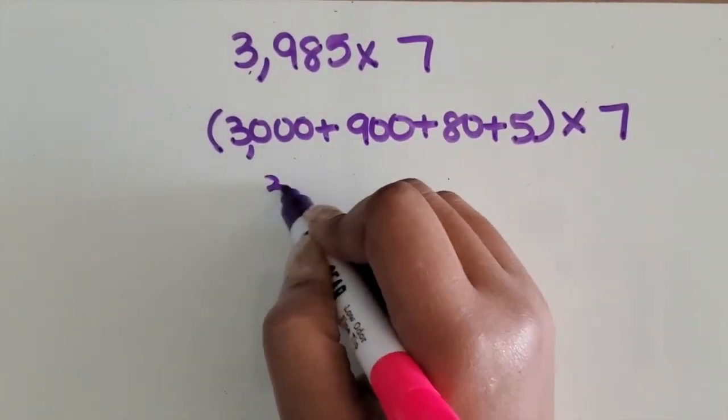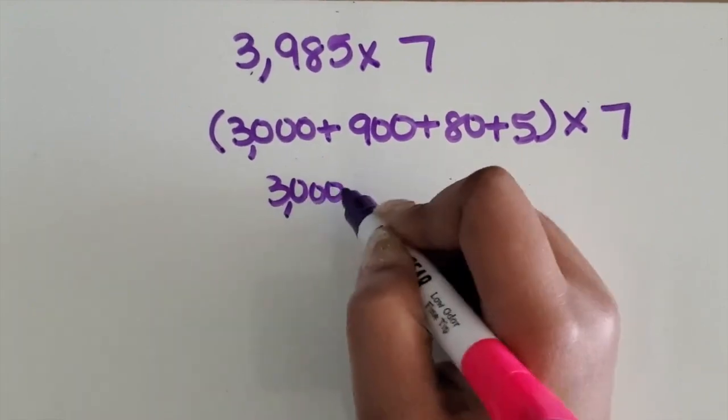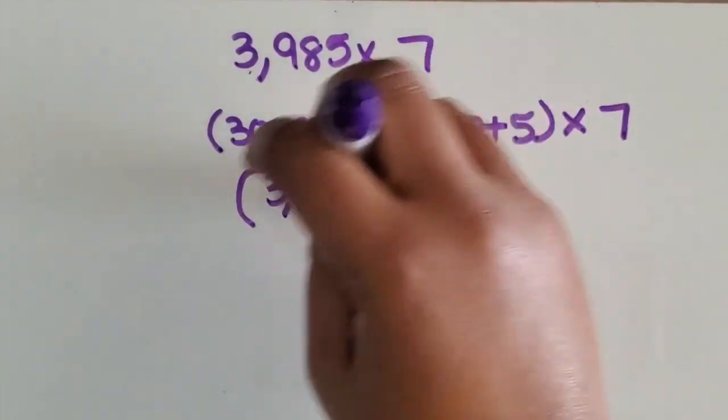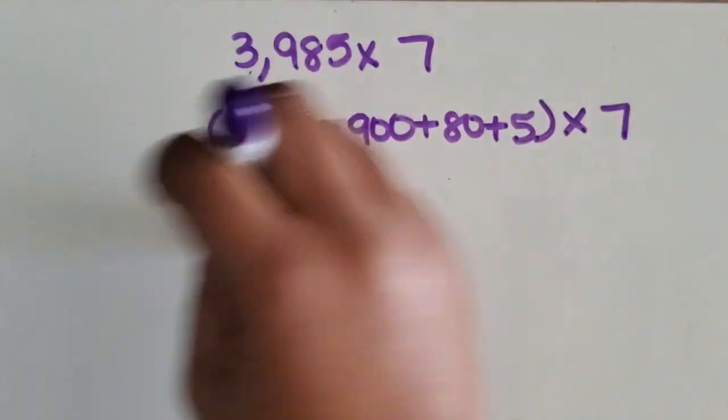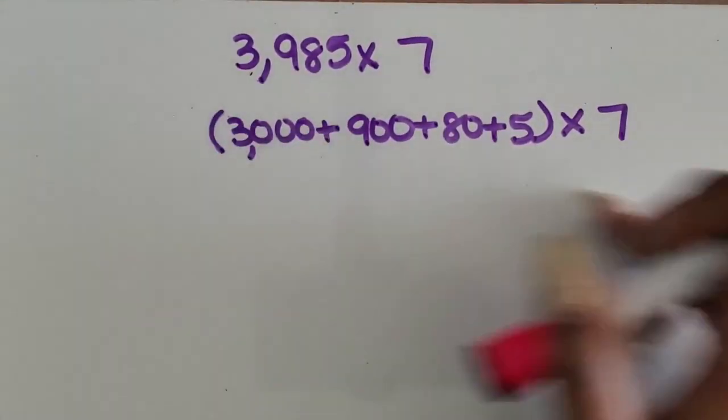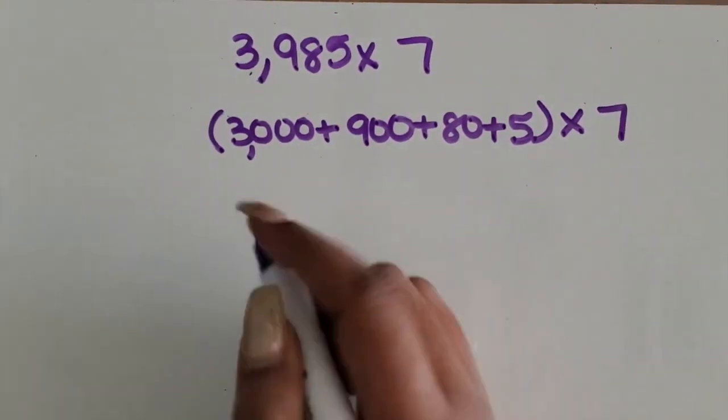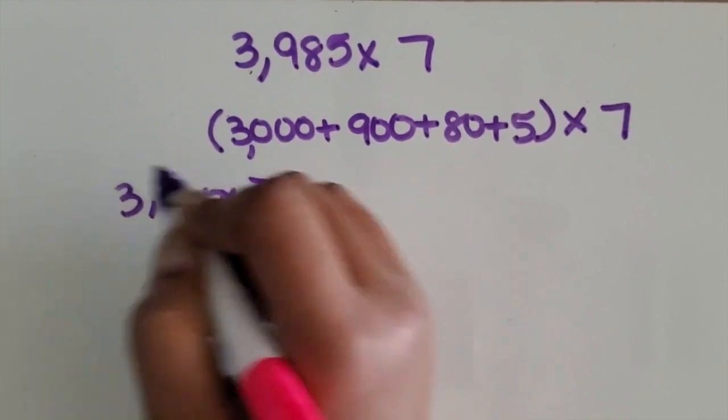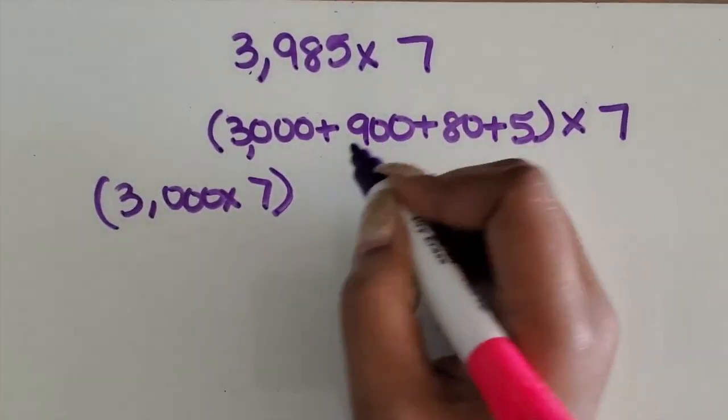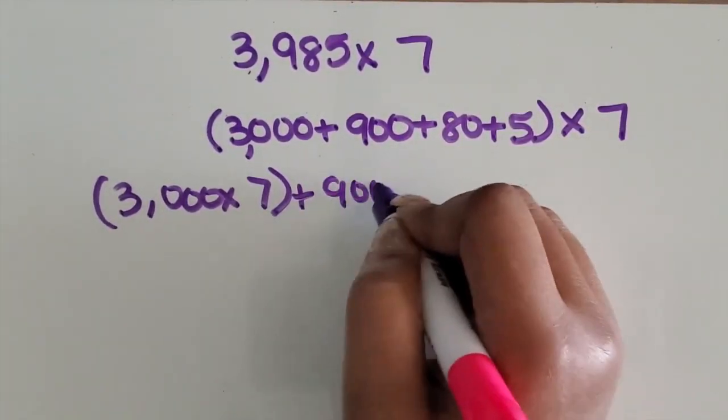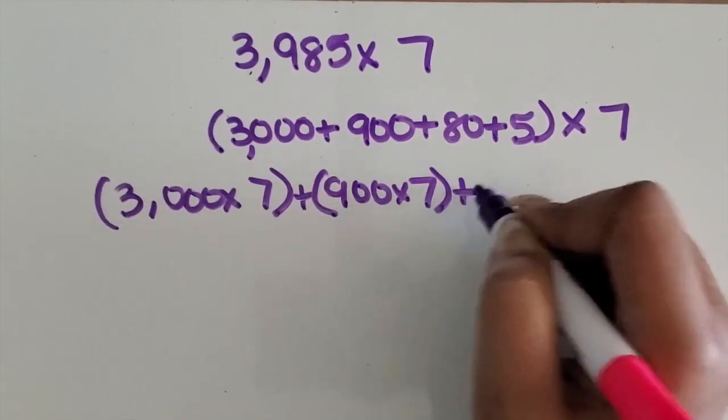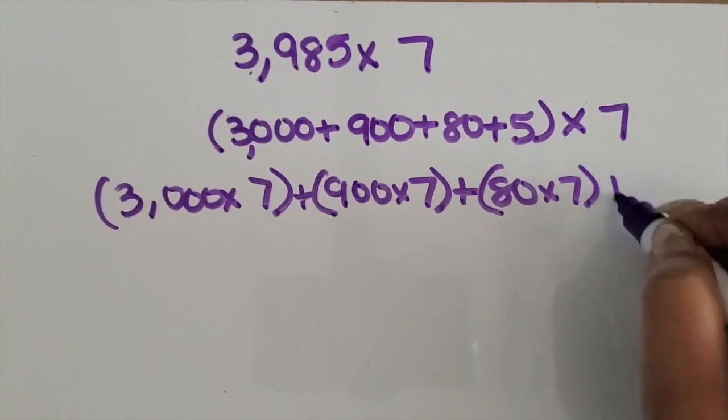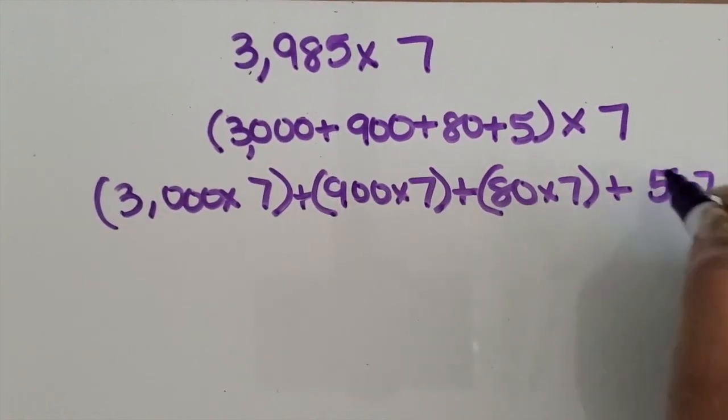So 3,000 times 7. Actually, let me move this over. It's going to be longer, I'm going to need a longer space. So we're going to start with 3,000 times 7 plus 900 times 7 plus 80 times 7 plus 5 times 7.